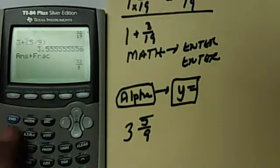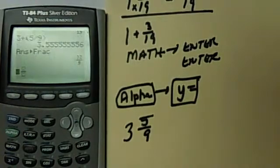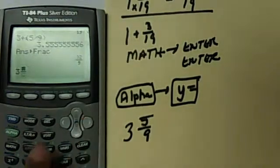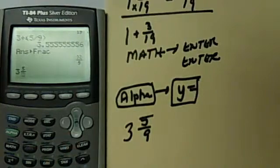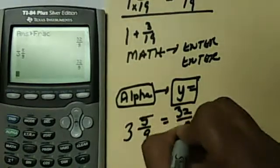If you have the upgrade, you go to alpha Y equals. You go down to the second one, and then you just fill in the blank. 3, move over 5, down to 9. And then you hit enter and you will get 32 over 9.